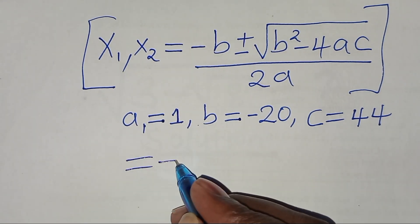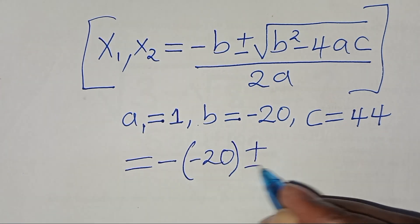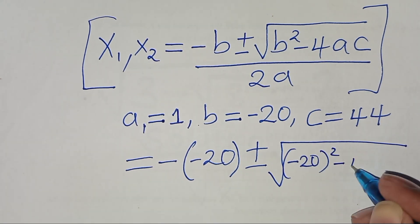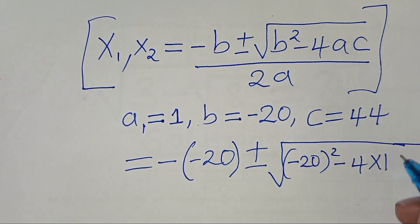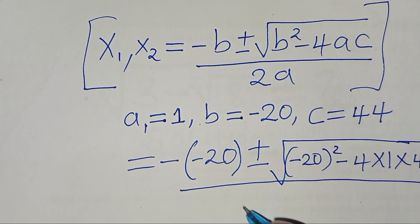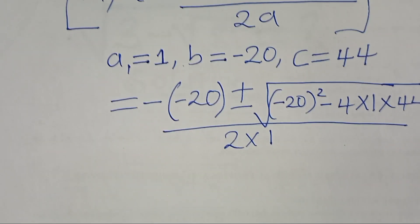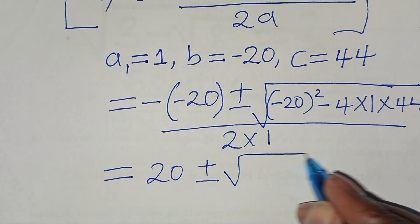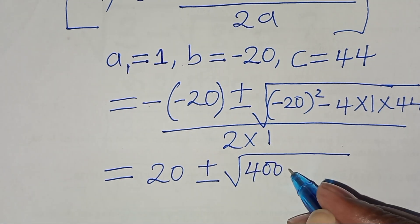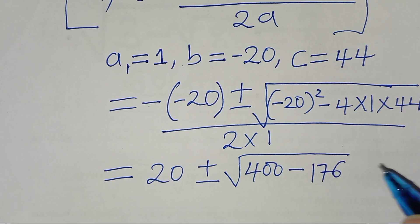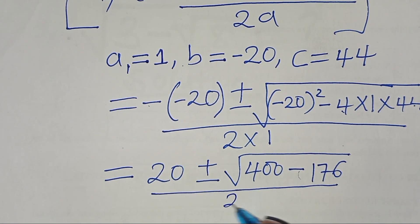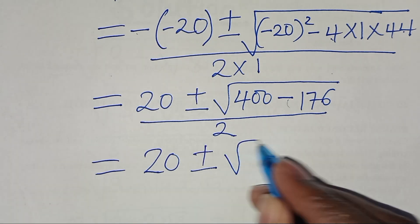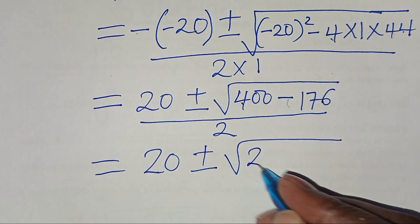Substituting: negative b is negative of negative 20, which is 20, plus or minus the square root of negative 20 squared minus 4 times 1 times 44, divided by 2 times 1. So we have 20 plus or minus the square root of 400 minus 176, all over 2. That gives us the square root of 224 in the numerator.